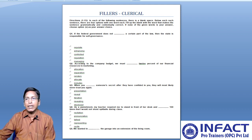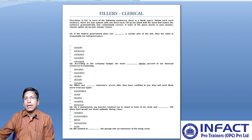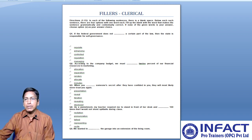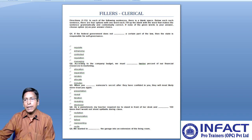Question number three: when you dash someone's secret after they have confided in you, they will most likely never trust you again. The statement means when you are trying to expose or reveal a secret conveyed to you by another person. From the given options — presentation, reveal, iteration, revealing, and disclosed — the most suitable word is option two, reveal, meaning to make information unknown to others visible or known.